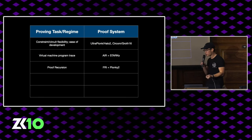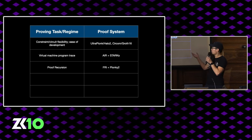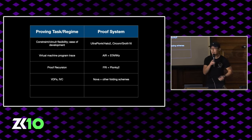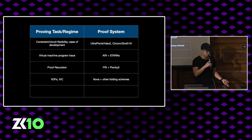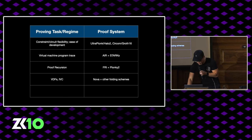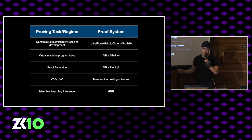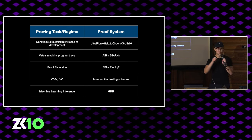Alternatively, if you care a lot about proof recursion, you might want to look into Fri plus Plonky2, since this uses native field arithmetic and everything is very fast with small fields. Also, if you care about VDFs or IVC, folding schemes like Nova are literally tailor-made for this. And finally, if you care about machine learning inference — due to the structured and data-parallel nature of ML — you might want to consider GKR.